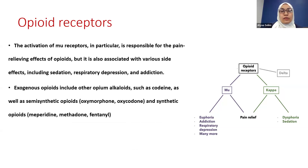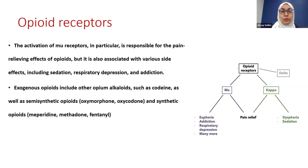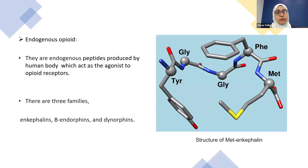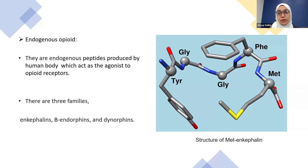Exogenous opioids include other opioid alkaloids such as codeine, semi-synthetic opioids such as oxymorphone, and synthetic opioids such as fentanyl. There is also another group — the natural agonists for these receptors — small peptides called endogenous peptides naturally present in our body. They can be divided into three groups: enkephalins, endorphins, and dynorphins.